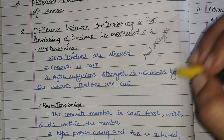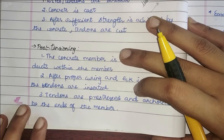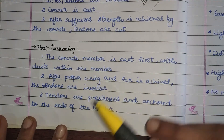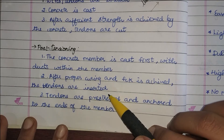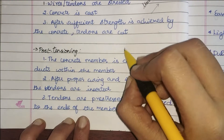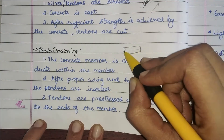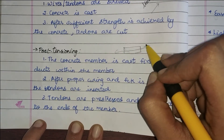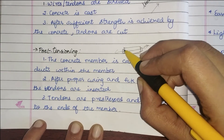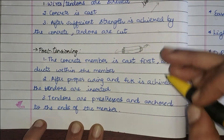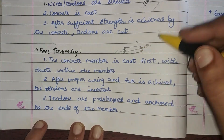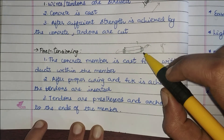In post-tensioning, the concrete member is cast first, and during casting, ducts are provided to place the wires. After proper curing and achieving the required characteristic strength, the tendons are inserted, pulled, and anchored at the end of the member. The pre-stress is transferred via anchorage blocks, which contribute the large part of stress transfer. Bond stress also contributes to some extent if the ducts are grouted; if not grouted, there is no bonding.